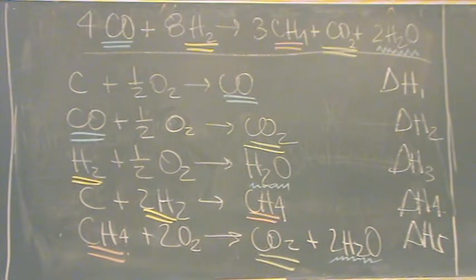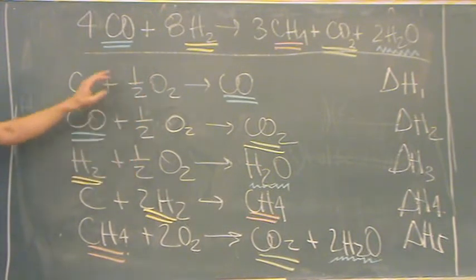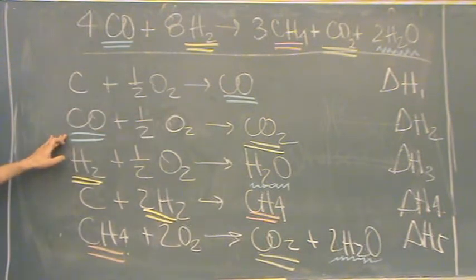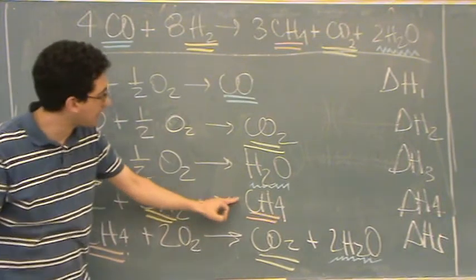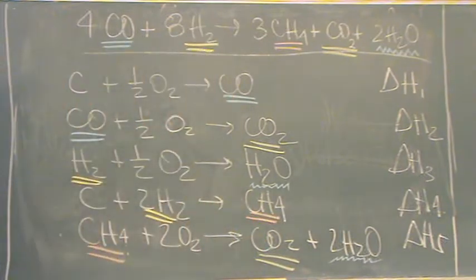This one's going to be slightly more painful. Usually what I do is look to see what's marked only once down here. So for example, CO is marked twice here. And H2 is marked twice. And CH4 is marked twice. And CO2 is marked twice. And water is marked twice. That makes it much more difficult. Because usually there's one that's marked once and that's the place you'd want to start. So we've got to figure out how to do this.